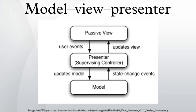The model is an interface defining the data to be displayed or otherwise acted upon in the user interface. The view is a passive interface that displays data and routes user commands to the presenter to act upon that data. The presenter acts upon the model and the view — it retrieves data from repositories and formats it for display in the view.